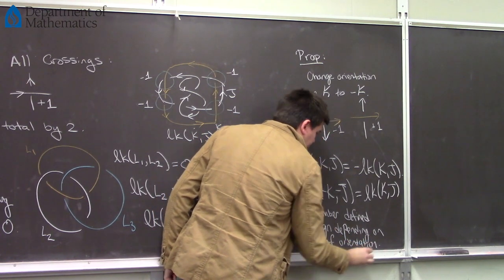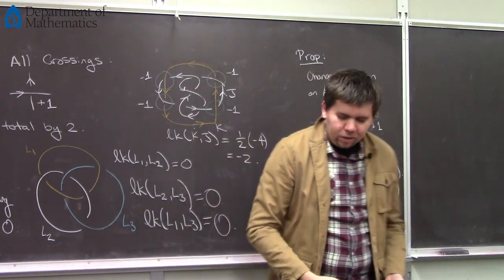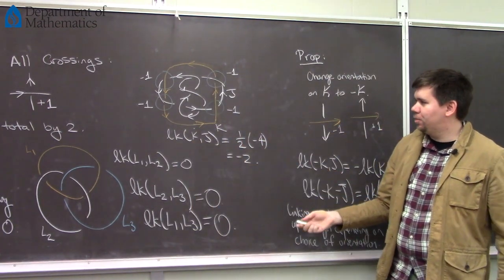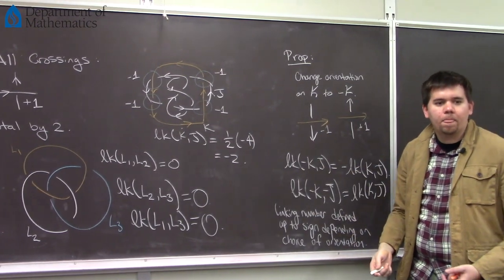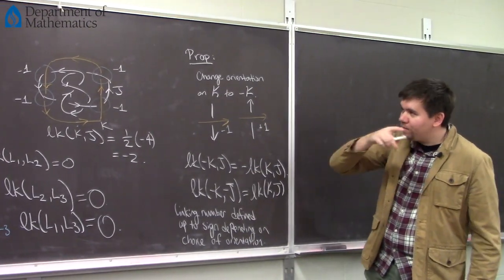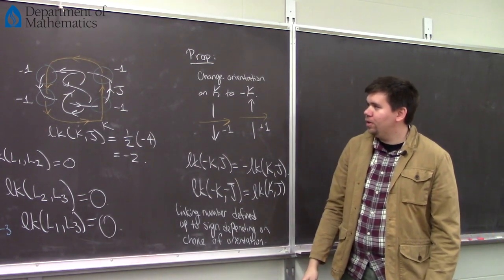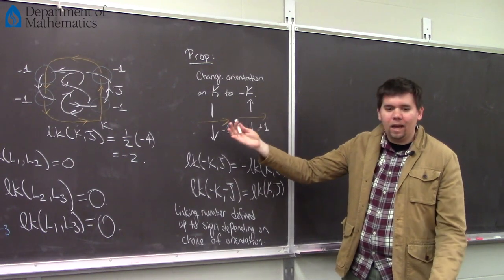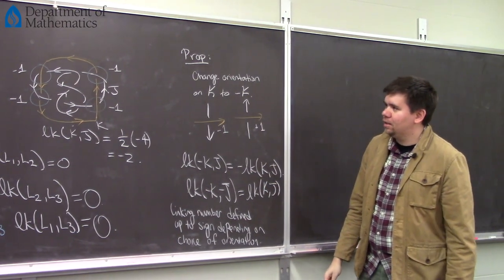The linking number is defined up to sign depending on your choice of orientation. So you might calculate the linking number for some link and get two, and your friend would get negative two — it might just be because you picked one of your orientations being opposite. Those are two ways to define linking number, but there are more interesting ways we can calculate it.